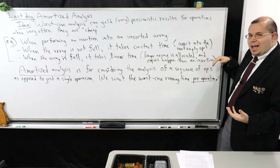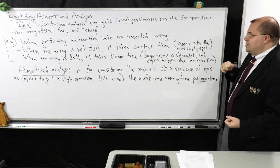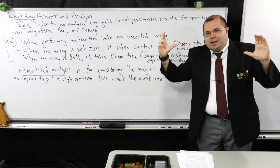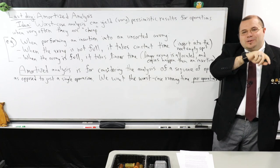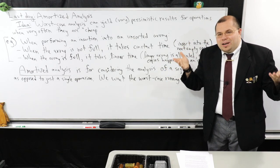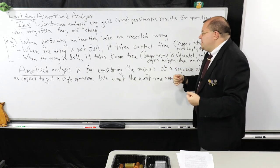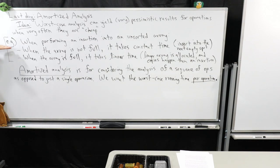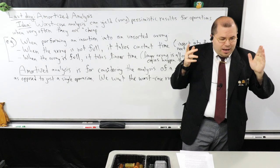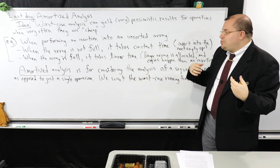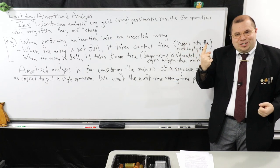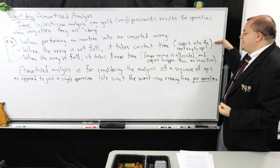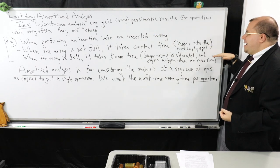This ties to the example from last time. Imagine I want to perform an insertion into an unsorted array — you have a bunch of elements and you insert each time into the next available spot starting at the front. There are two possibilities. When the array isn't full you can do this in constant time, because you track the number of elements in a counter, which tells you exactly where to put the next element.